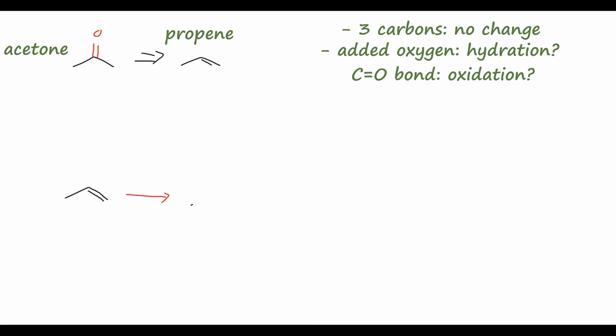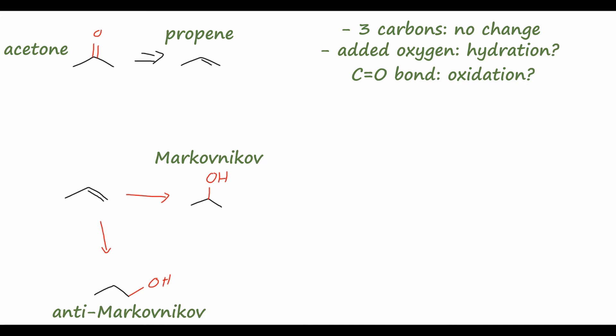We could get this product where we have the OH group added to the middle carbon — that's probably closer to our final product. This is called Markovnikov addition, where we've added to the more substituted carbon. Using different reaction conditions, we could also add to the other carbon to get n-propanol with the hydroxyl on the one carbon — that would be our anti-Markovnikov product. We probably want to go with the Markovnikov product.